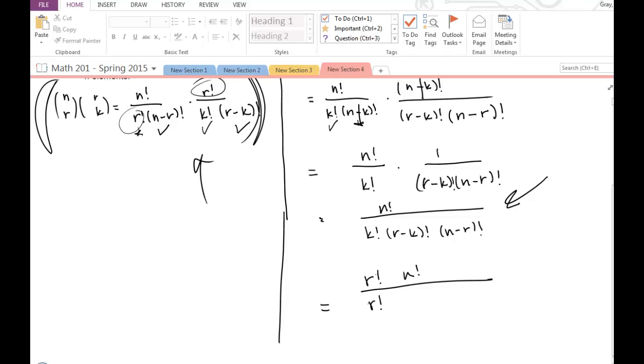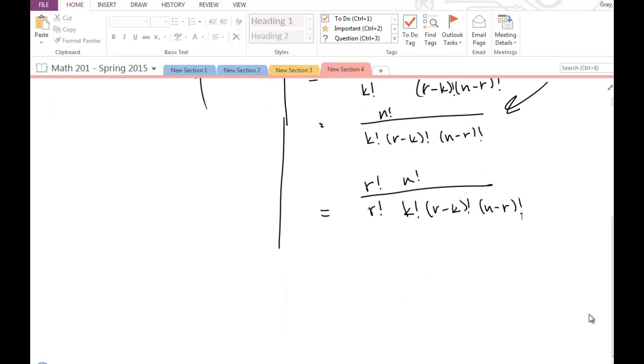So I multiply top and bottom, and that's okay, I can multiply any expression by one without changing the value of that expression or without changing the meaning, right? Okay, so now let's see what we have.